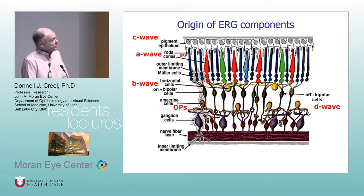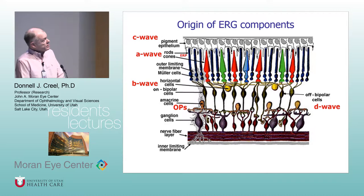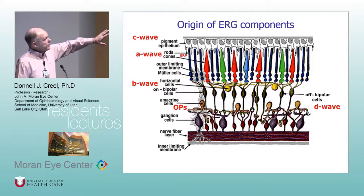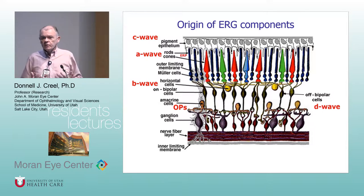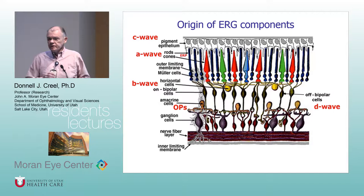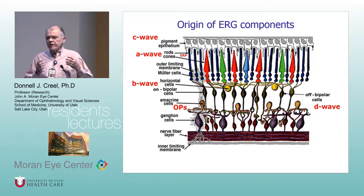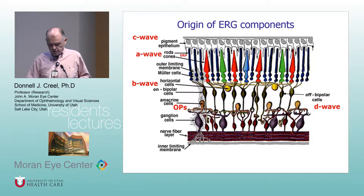If you look at this cartoon of the retina, the A wave is generated by the layer of rods and cones. The B wave is everything in the mid-retina — mainly the on-bipolar cells and the Mueller cells, which are physically the biggest. But everything in the mid-retina contributes to it: the horizontal cells and the amacrine cells also contribute.